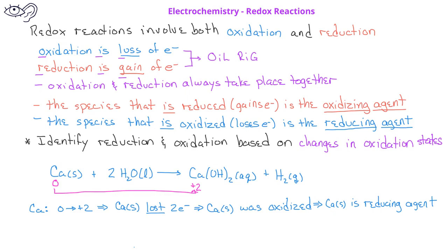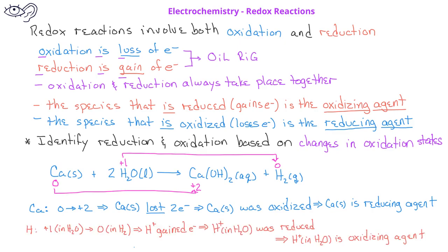The hydrogen in water has an oxidation state of plus one. On the product side, the hydrogen atoms in hydrogen gas have an oxidation state of zero. Therefore, the hydrogen in the water gained electrons, and so we could say that the hydrogen ions in water were reduced. We could also say that the hydrogen in water is the oxidizing agent.